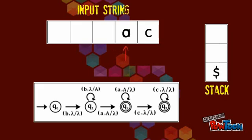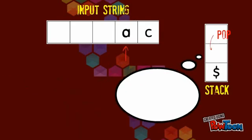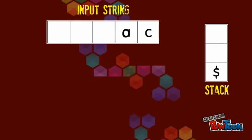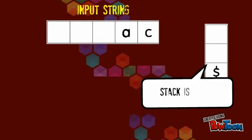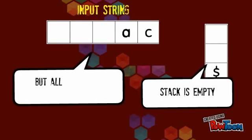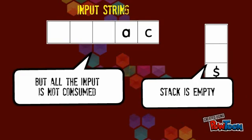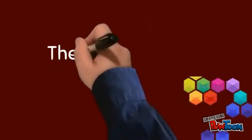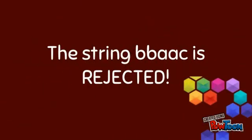Then, read the fourth string and pop. Oops — no A to be popped. Stack is empty, but all the input is not consumed. So, the string that we test is rejected.